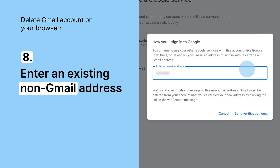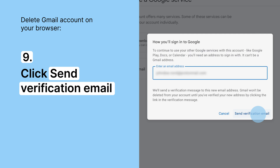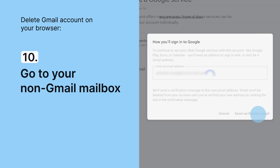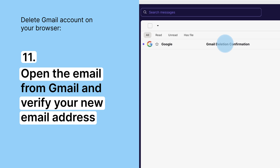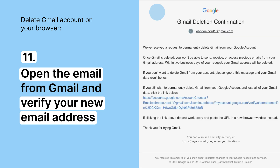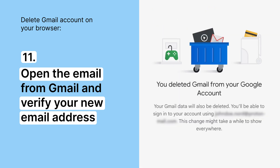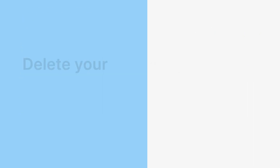Enter an existing non-Gmail address that you will later use to connect your Google account. Click Send verification email. Go to your non-Gmail mailbox. Open the verification email from Gmail and click the link to confirm your new email address. That's it!